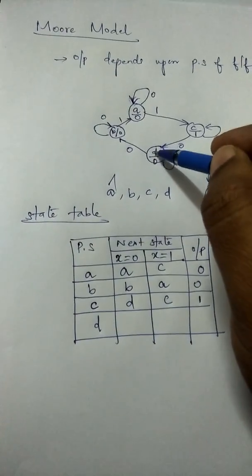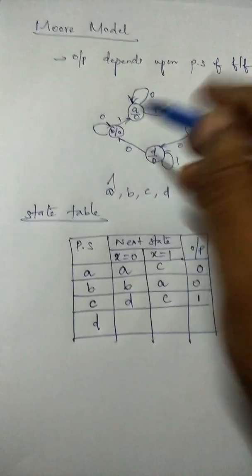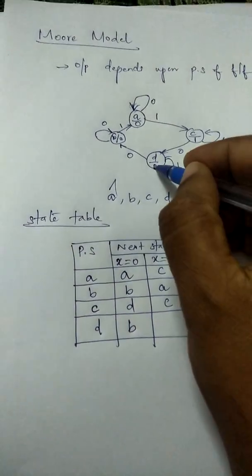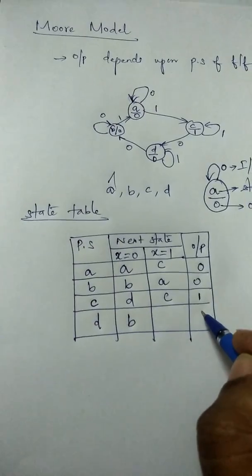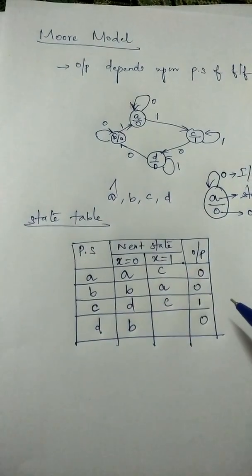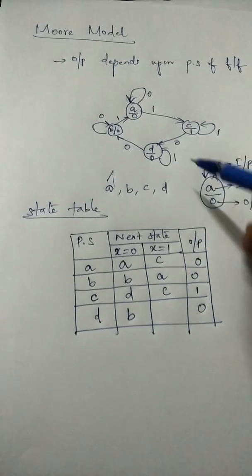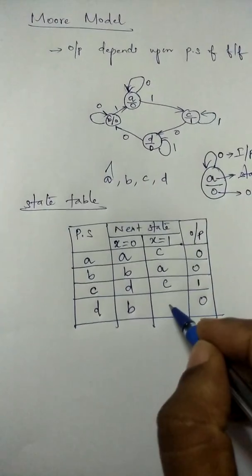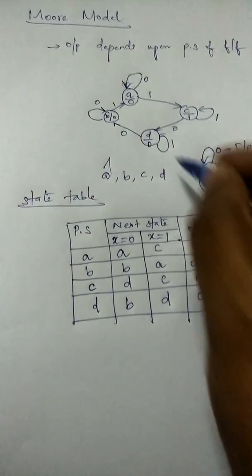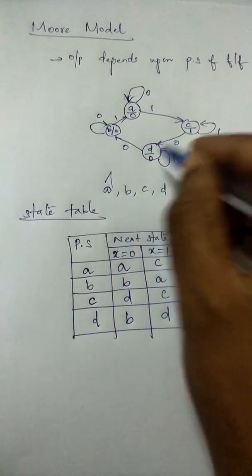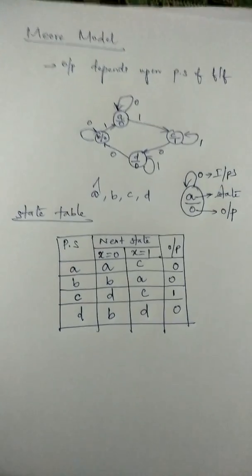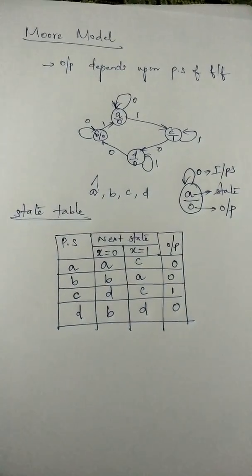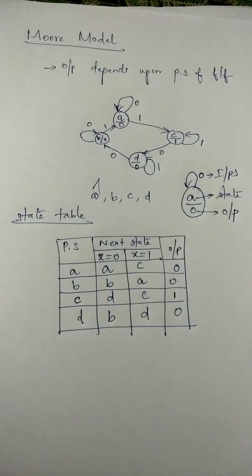For state D, when the input is 0 it goes to state B, with output 0. When the input is 1, it goes to the same state D, and the output is again 0. This concludes the Moore model.